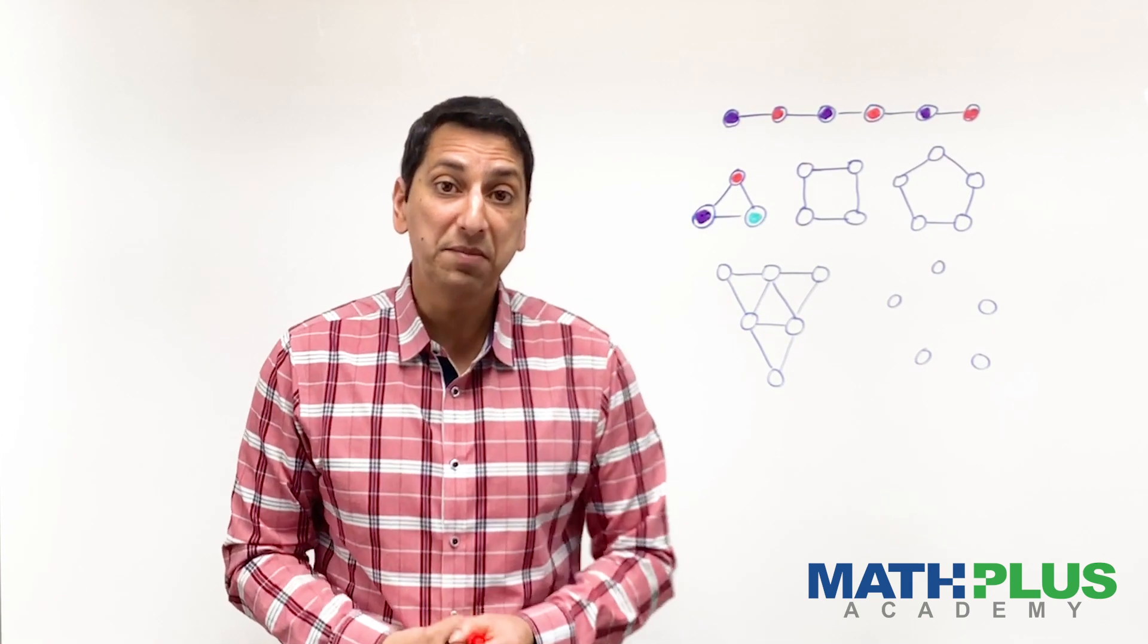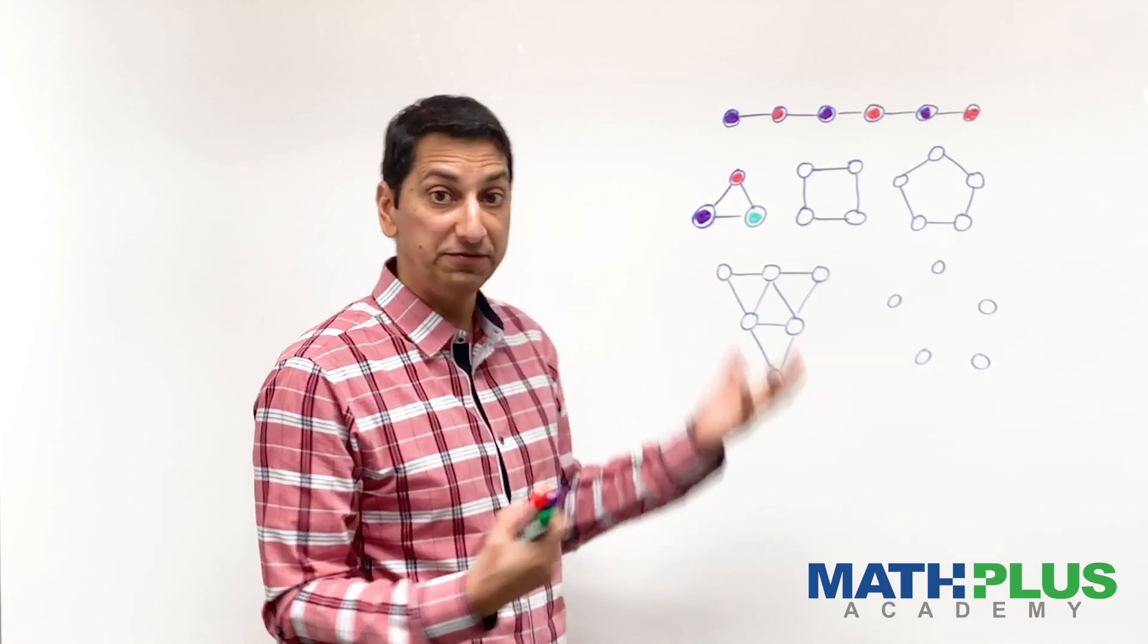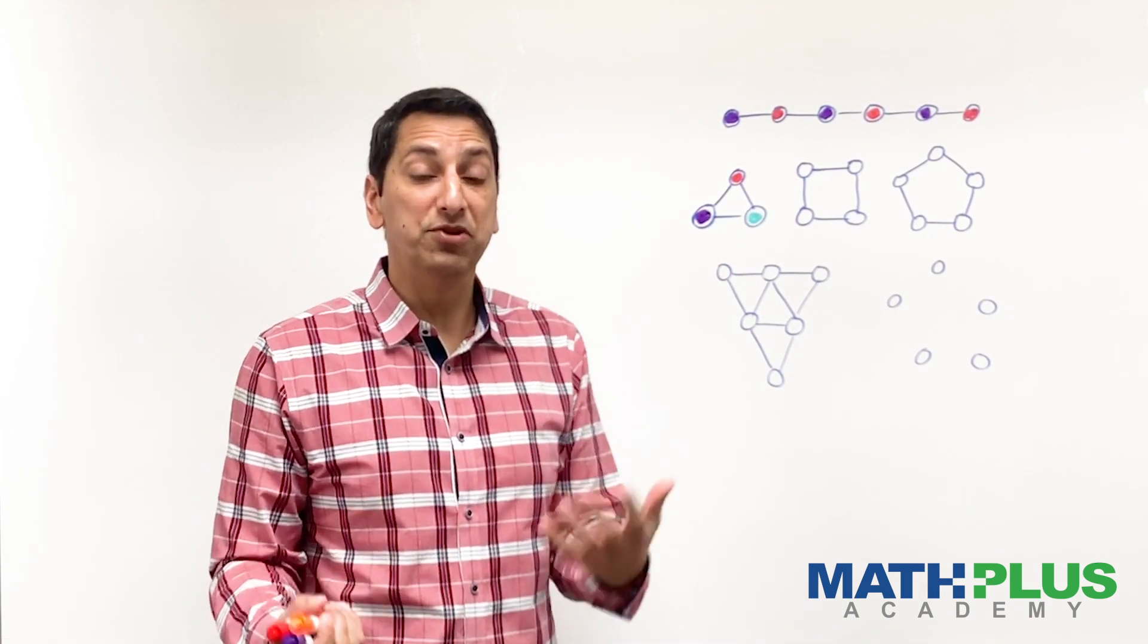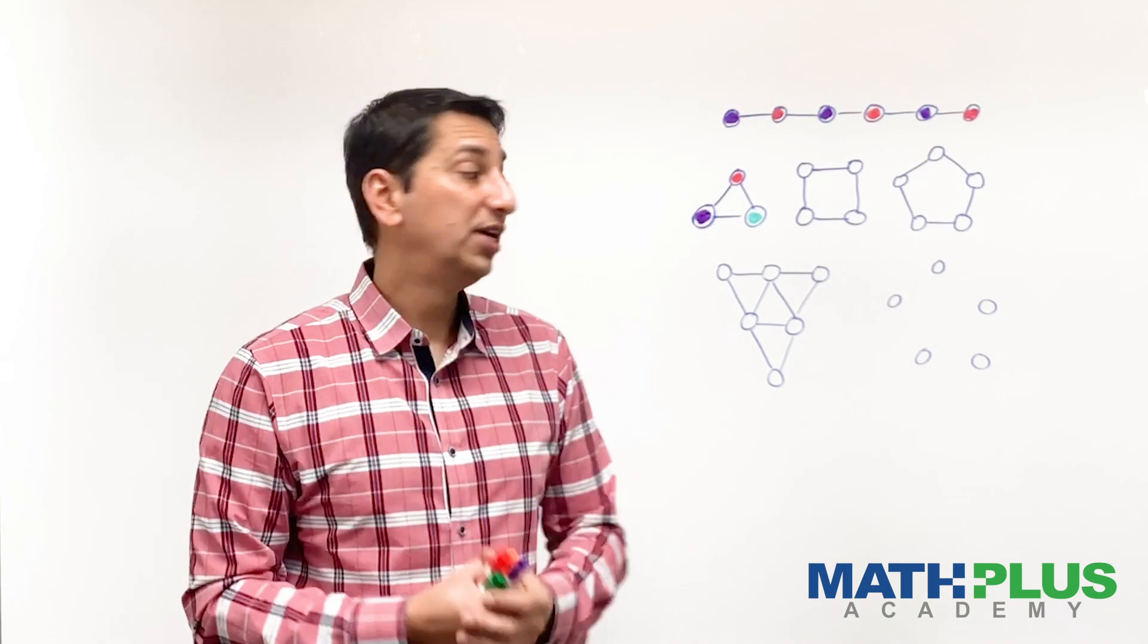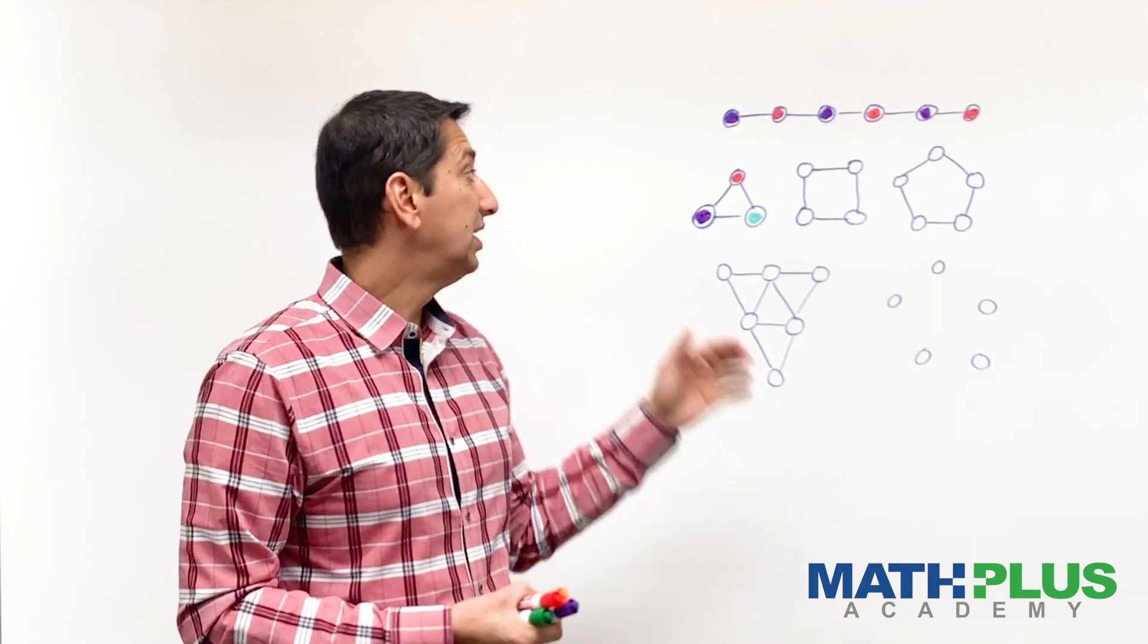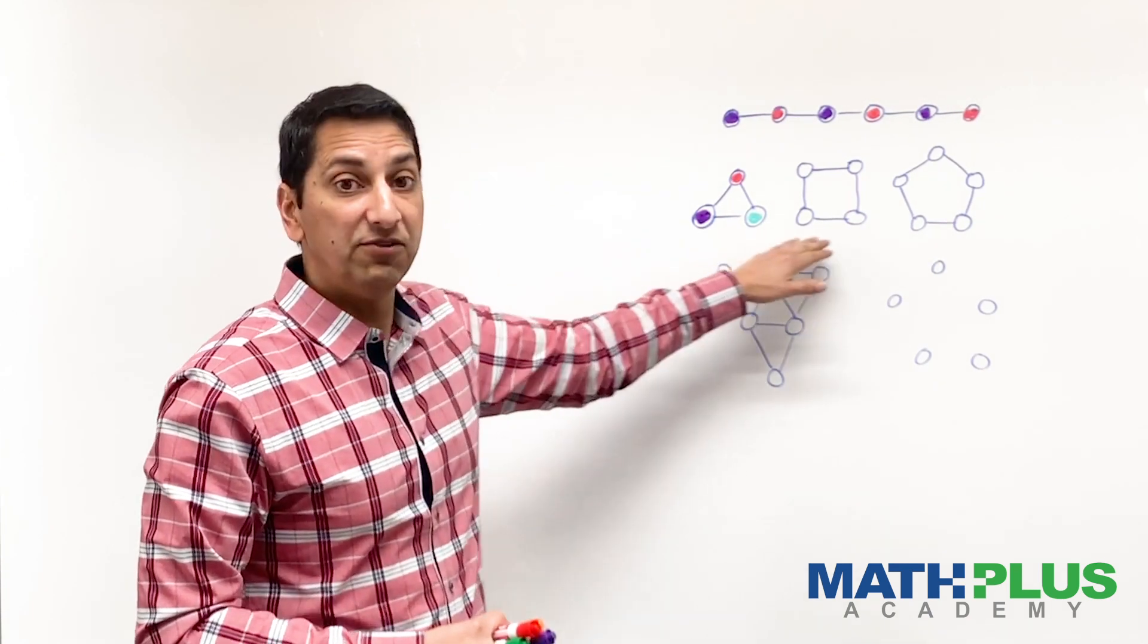Now the chromatic number is going to depend on the number of dots you have, and also how they're connected. If you add connections or remove connections, that can change the chromatic number. So I'll let you try these and see what you come up with. You might see a pattern here, three, four, five.